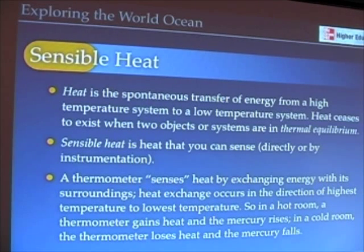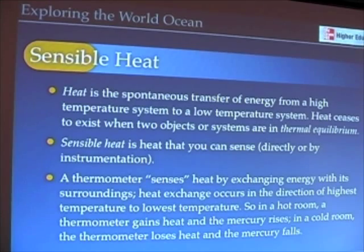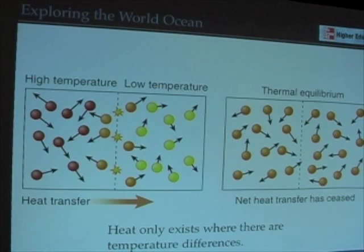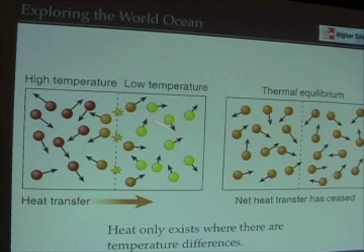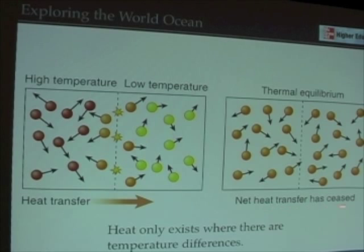A thermometer senses heat because it's exchanging energy with the surroundings. For example, a thermometer in a hot room — heat is going into the thermometer and the mercury is rising, and the opposite happens in a cold room. In a higher-temperature system, molecules are moving faster and colliding with, and exchanging energy with, slower molecules. So heat flows from the high-energy system to the low-energy system. When they've reached thermal equilibrium, there is no heat transfer — it simply no longer exists.